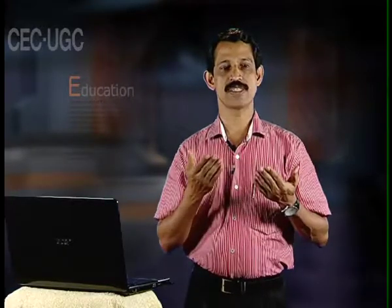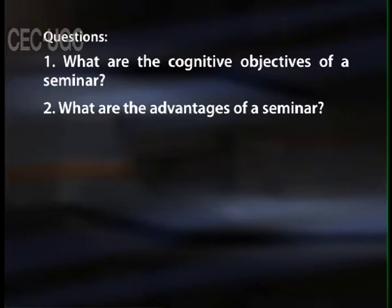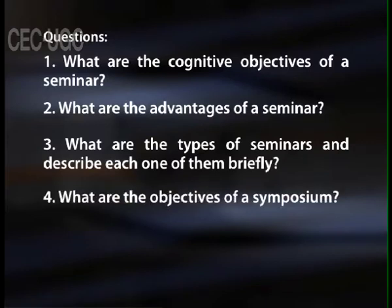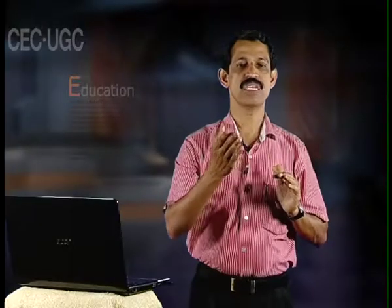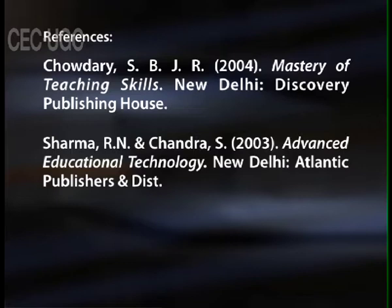Now you can try to answer the following questions: What are the cognitive objectives of a seminar? What are the advantages of a seminar? What are the types of seminars — describe each briefly? What are the objectives of a symposium? What are the advantages of a workshop? For further reading, you can refer to: Mastery of Teaching Skills by Chowdhury S.B.J.R., published by Discovery Publishing House, New Delhi, 2004; and Advanced Education Technology by Sharma R.N. and Chandra S., published by Atlantic Publishers and Distributors, New Delhi, 2003.